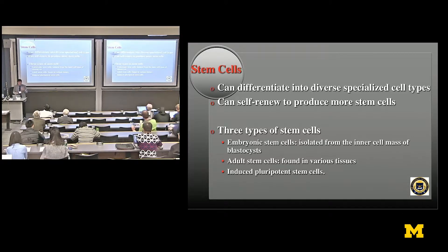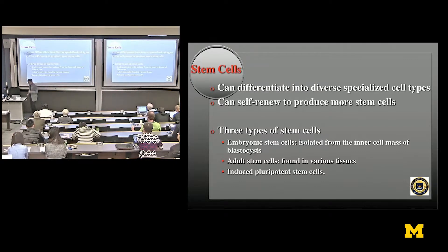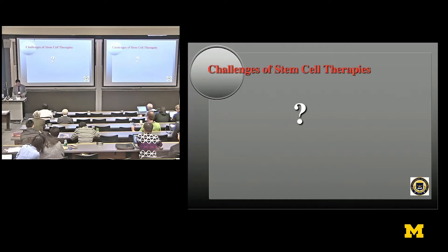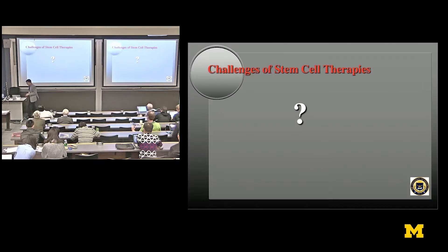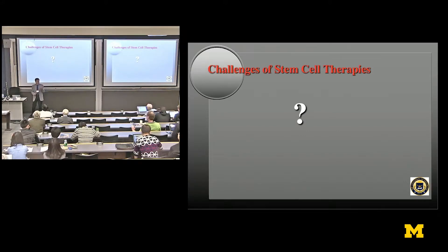People started to be very excited about stem cells because they can grow a lot — you can make an infinite number of cells — and they can grow into any tissues. So you don't have to harvest cartilage to repair cartilage, you don't have to harvest liver to repair the liver. But what was the problem? As a famous philosopher once said, life is like a box of chocolates — you never know what you're going to get. Stem cells can grow into anything, and it may not be what you want.